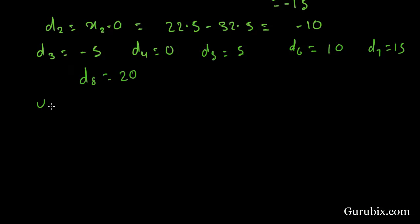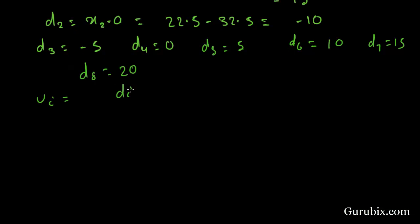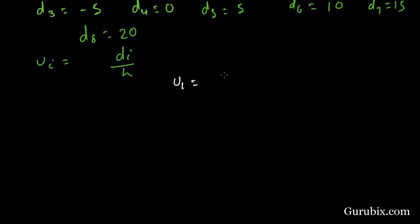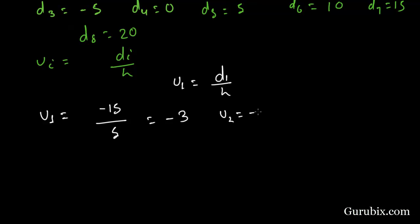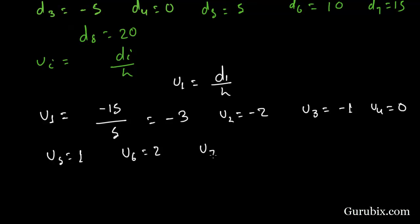Now we have to calculate Ui, where Ui equals Di upon H. So U1 equals minus 15 upon 5, equals minus 3. Similarly, U2 is minus 2, U3 is minus 1, U4 is 0, U5 is 1, U6 is 2, U7 is 3, and U8 is 4.